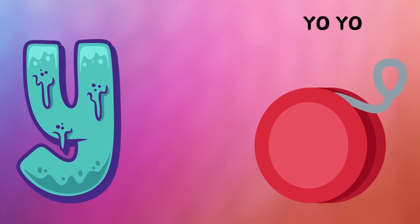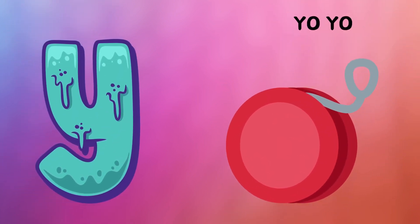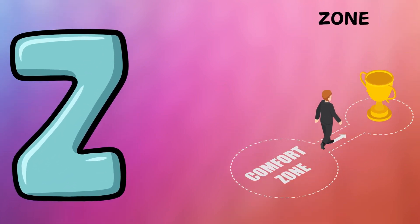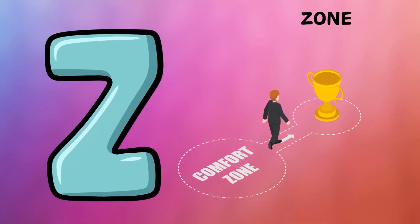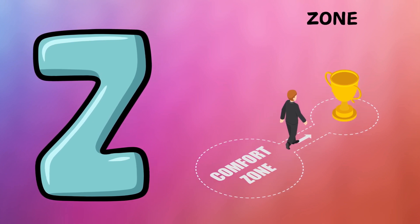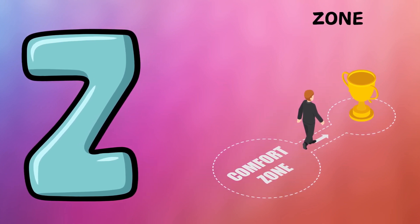Y is for yo-yo, y-y-yo-yo. Z is for zone, z-z-zone. W-w-w-watch.